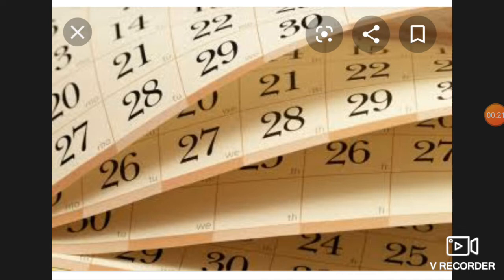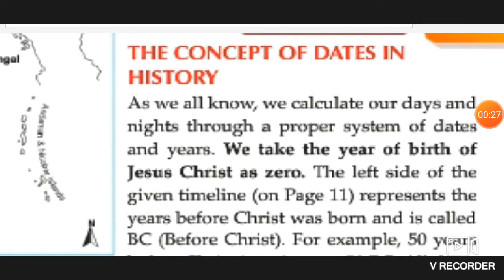As you all know, we calculate our days and nights through a proper system of dates and years. In present times, almost all the countries of the world follow Western chronology to keep the record of their events. And according to Western chronology, the period after the birth of Jesus Christ — who is the founder of Christianity — is called A.D., or Anno Domini.